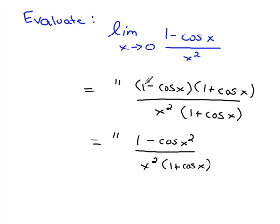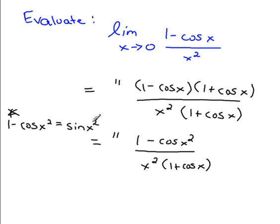We're at the point where we did something like the rationalizing numerator question, which falls under the algebra part. Now we ask ourselves: can we simplify any further? Yes we can. 1 minus cos x squared reminds us of something — it is the identity sine squared x. You'll need to remember identities like this for Calculus 1. Put a star next to it. So instead of writing 1 minus cos x squared, we write sine squared x. Already look at the funnel effect coming into play — 1 minus cos x squared becomes the simpler term sine squared x.